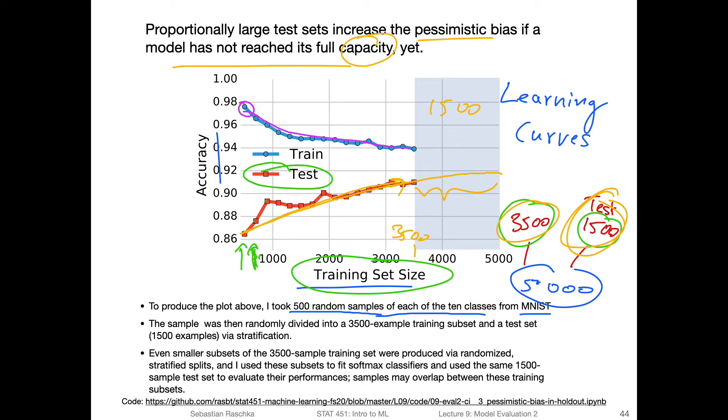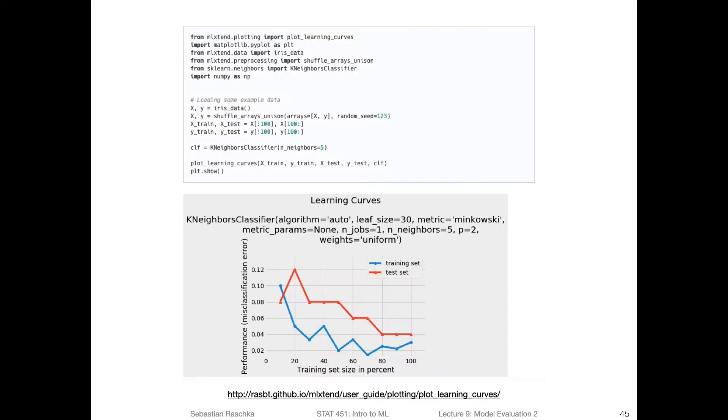Because you can see there's some trend, it may saturate at some point, but I could guess that in this region the performance would still slightly improve. So by withholding this test set, I actually introduced this pessimistic bias because the model may have not reached its full capacity yet. So here capacity means that it could become better. If it had more data, it could learn to become better. In this case I actually used a very simple classifier, softmax classifier. Those students who took statistics 453 may know what a softmax classifier is, that's just multinomial logistic regression.